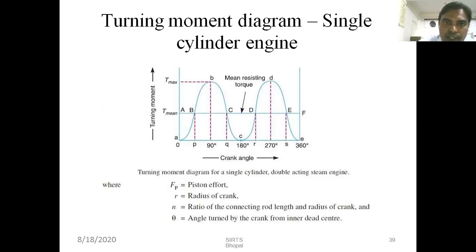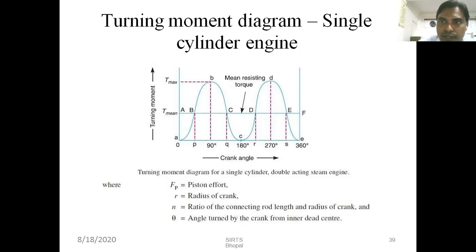The excess of energy will be stored in the flywheel. Where there is a need — the area small A, capital A, capital B, small P — that is where the energy requirement is. The flywheel will transfer that stored energy. So the speed of the flywheel is maximum at point C, because the energy is more and is stored in the flywheel. When the flywheel stores energy, its speed increases and kinetic energy increases to a maximum at point C.